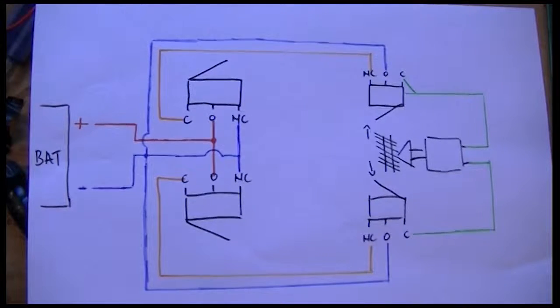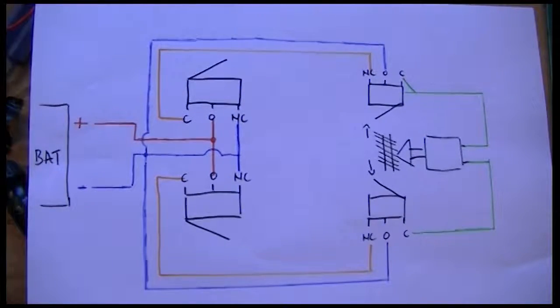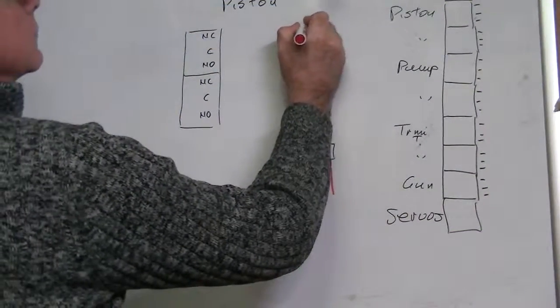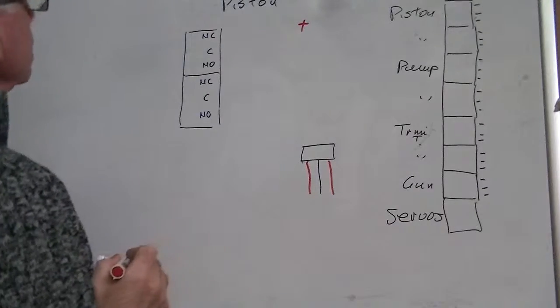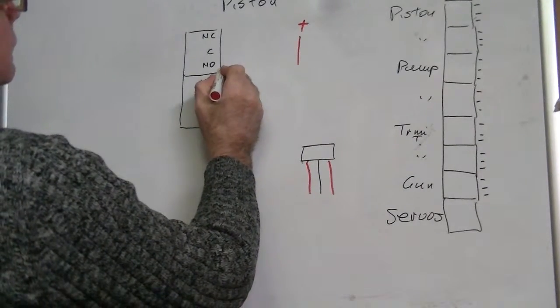And you can see how that is wired to two microswitches that sit on either ends of the travel of the pump. So in actual fact, I need three wires that come out from these relays to go to the piston.